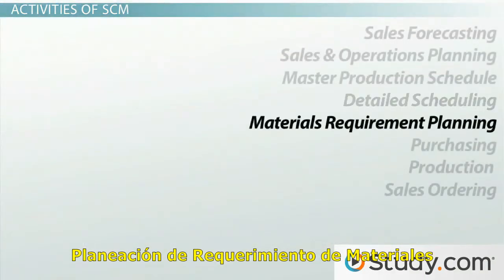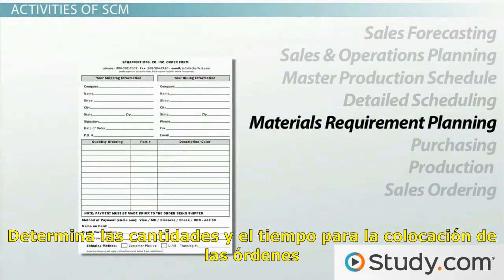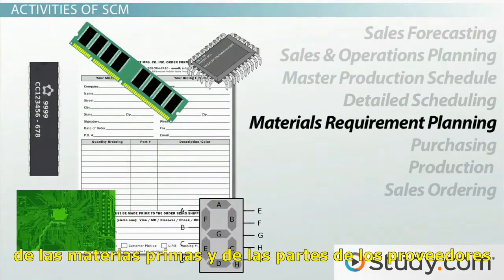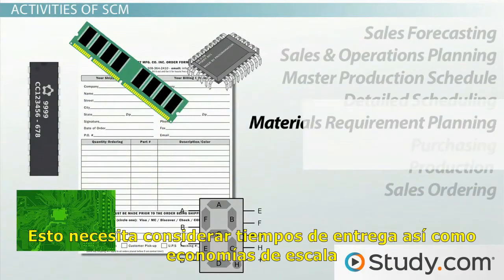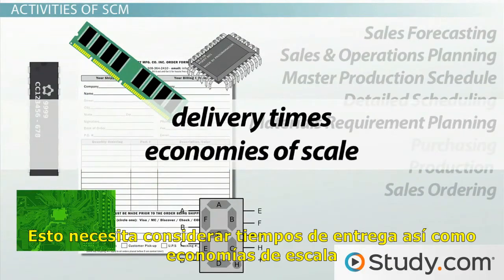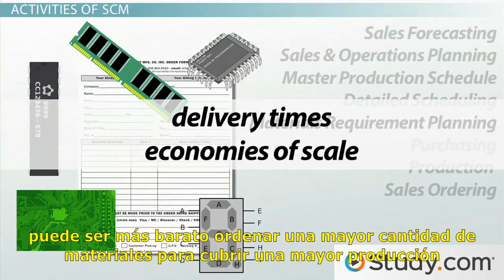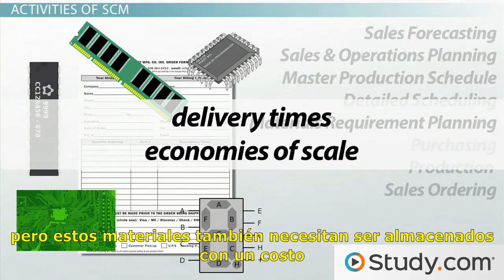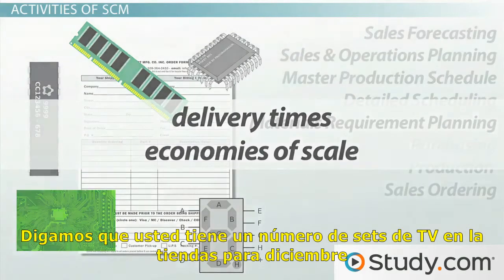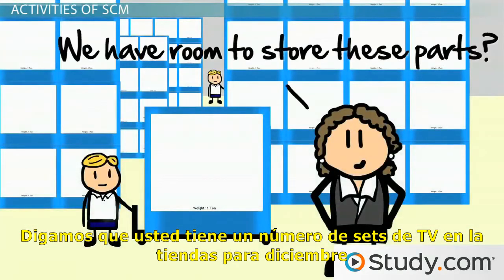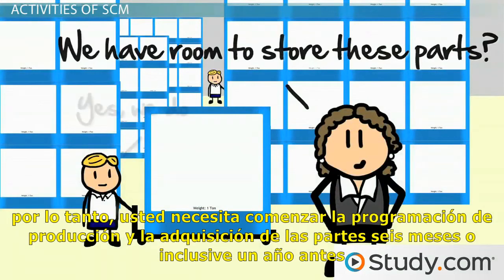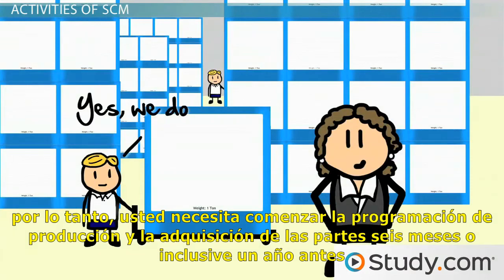Materials requirement planning determines the amount and timing for placing orders for raw materials and parts with suppliers. This needs to consider delivery times as well as economies of scale — it may be cheaper to order a larger number of materials to cover more production runs, but that material also needs to be stored at a cost. For example, if you want a certain number of TV sets in stores by December, you may need to start scheduling the acquisition of parts six months or even a year earlier.